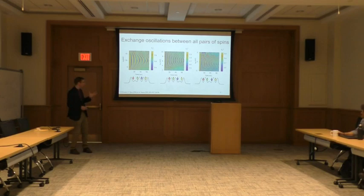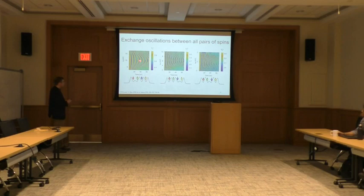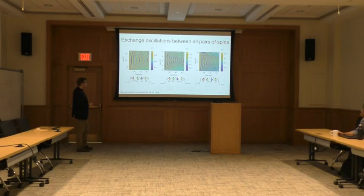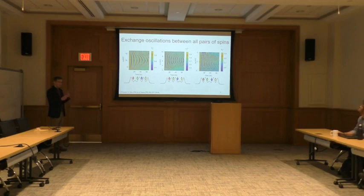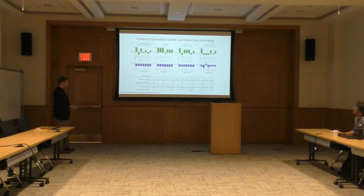These are exchange oscillations between spins one and two. If you take a line cut, you see that as time varies, the spins are literally swapping back and forth. Here are exchange oscillations between spins three and four, and in this panel are exchange oscillations between spins two and three. This is a prerequisite for moving quantum states anywhere throughout this array. Using concatenated swap pulses lets us transfer both classical and entangled states throughout this array.